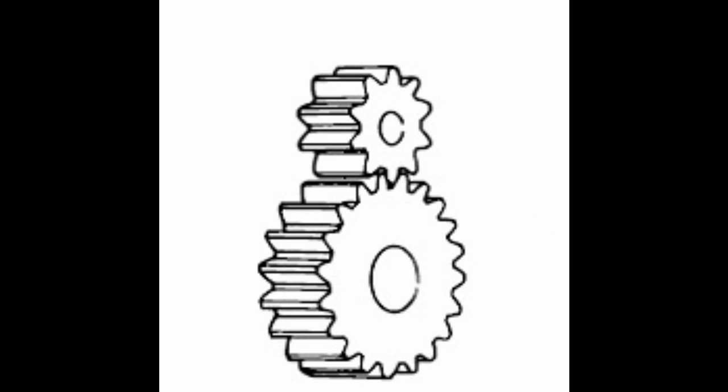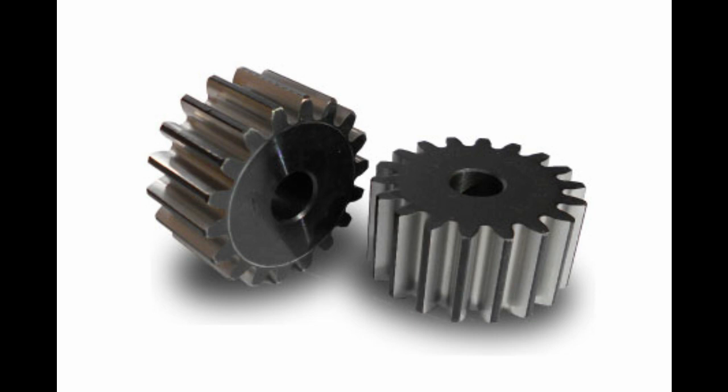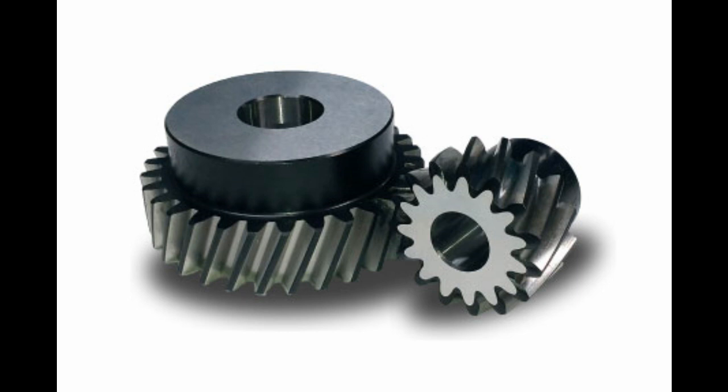Spur gears belong to the parallel shaft gear group and are cylindrical gears with a tooth line which is straight and parallel to the shaft. Spur gears are the most widely used gears and can achieve high accuracy with relatively easy production processes. They have no load in the axial direction (thrust load). The larger of the meshing pair is called the gear and the smaller is called the pinion.